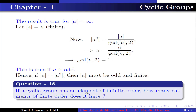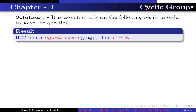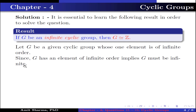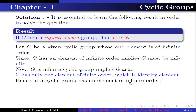Question number 18: If a cyclic group has an element of infinite order, how many elements of finite order does it have? It is essential to know the following result: if G is an infinite cyclic group, then G is isomorphic to Z. Let G be a cyclic group with one element of infinite order. Since G has an element of infinite order, G must be infinite, because the order of an element divides the order of the group. Since G is an infinite cyclic group, G is isomorphic to Z, and Z has only one element of finite order — the identity element. Hence, such a cyclic group has only one element of finite order.